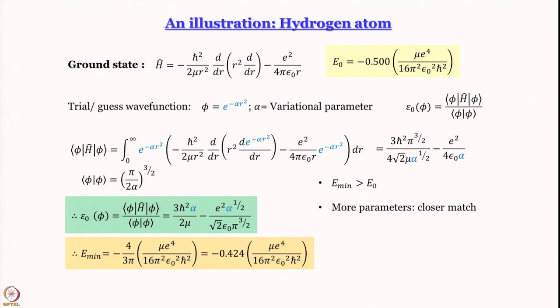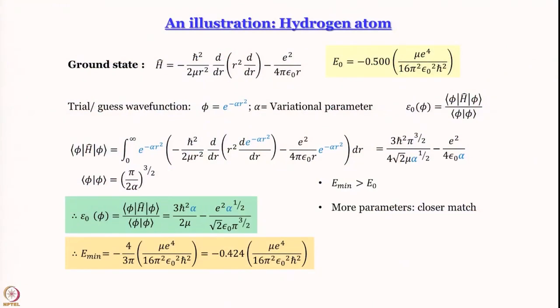When you do curve fitting with more parameters, you always get a better match, and sometimes there is the danger of over-parameterization. Here we do not have to worry about over-parameterization because we cannot do better than the best — whatever we get is always more than the actual value of energy. Even if you over-parameterize it is not a problem; it is a beautiful consequence of the upper limit theorem. You can keep increasing the number of parameters and need to optimize epsilon_0 with respect to each parameter.